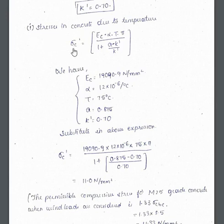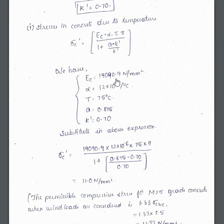The expression for σc' is: σc' = Ec × α × t × (π / (1 + a − k'/k')). The Young's modulus of concrete, Ec, is obtained from the modular ratio and equals 19090.9 N/mm². Alpha (α) is the coefficient of thermal expansion, which is 12 × 10⁻⁶ per degree Celsius, applicable for both concrete and steel. T is 75 degrees Celsius as given in the problem.